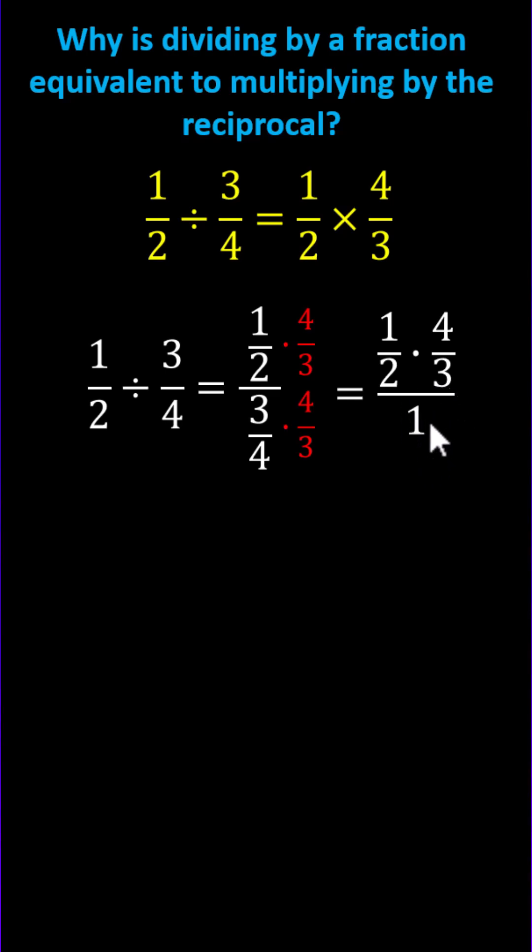We know a denominator of 1 is optional, where division by 1 doesn't change the value. We have now shown that 1 half divided by 3 fourths is equivalent to 1 half times 4 thirds, or dividing by a fraction is equivalent to multiplying by the reciprocal.